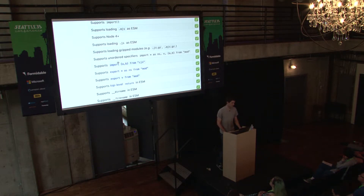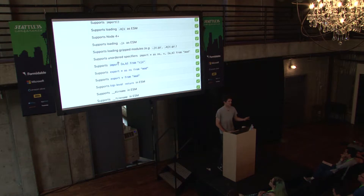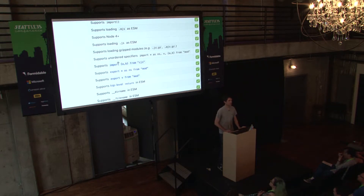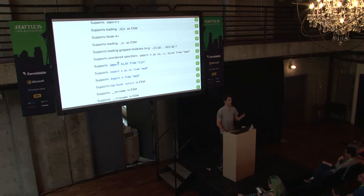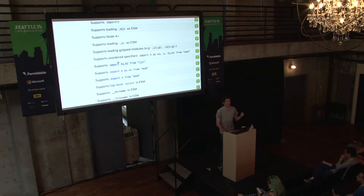We also support things that are experimental — stage one at the moment — which are source pragmas. Everyone's probably used "use strict". Similar to that, you could say "use module", and that would hint to the parser that you want to treat the file as a module. So instead of relying on an out-of-band indicator like a file extension, you could tell it in the source code how you want to process the file.